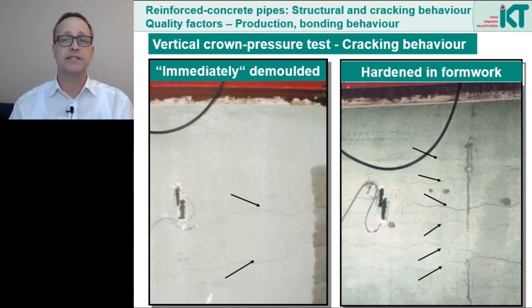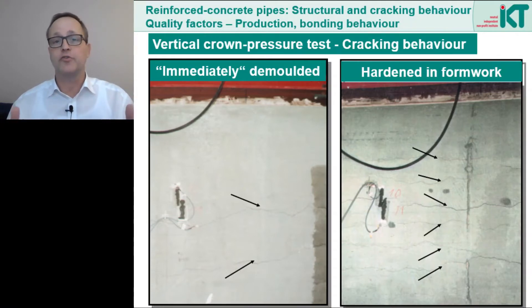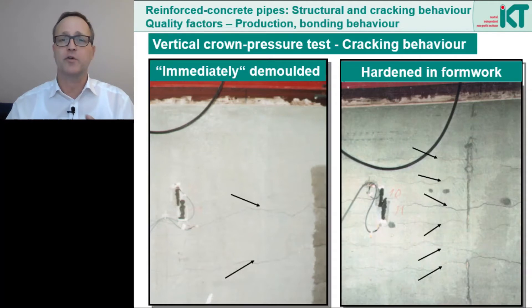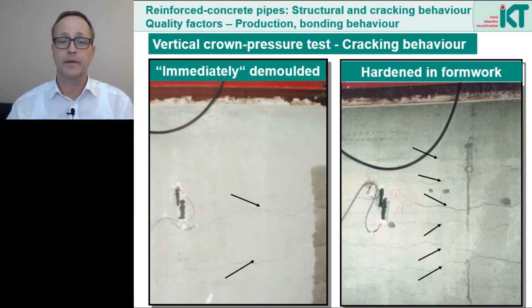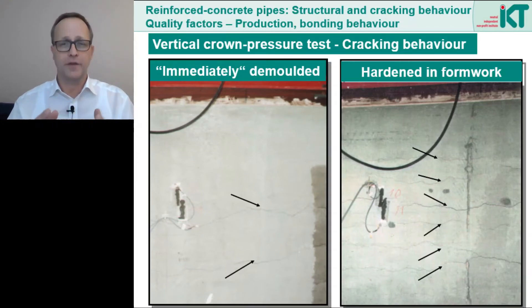The production process is decisive in improving the bonding behaviour between steel and concrete. In the so-called crown pressure test, the cracks appear in the crown, invert and the spring line of the pipe, just as they do during on-site installation. Depending on the manufacturing process we see large differences in the crack width and crack distribution. On the left, a component that was immediately demoulded shows a few but large cracks; on the right, a component cured in the formwork shows many but much smaller cracks — and all this with the same concrete and the same steel reinforcement. Hardening in the formwork leads to a real improvement in the bond, because the crack widths are significantly smaller.